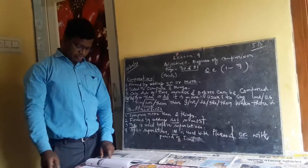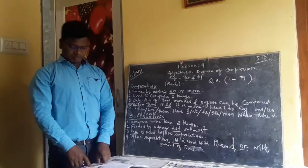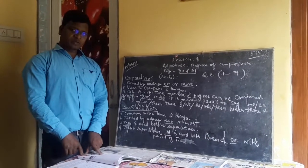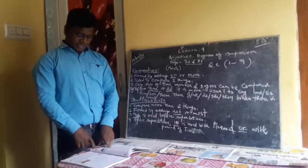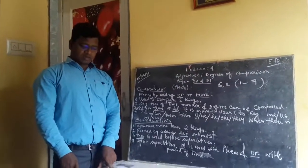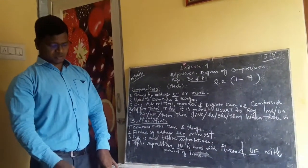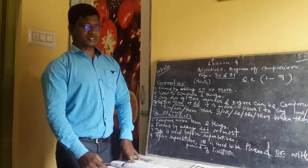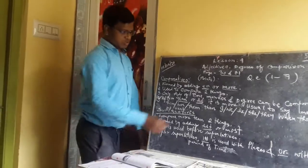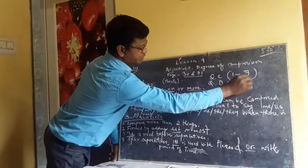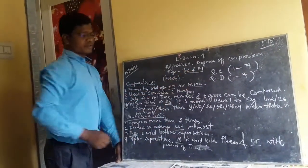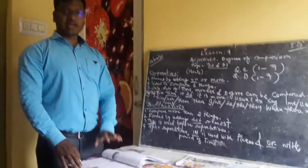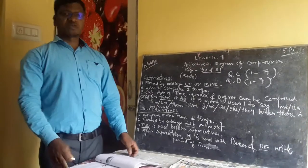Let us move on to question number D: rewrite these sentences correctly. For example: 'Messy is famouser than Tenured Card' — here 'famouser' is wrong. In the comparative degree, we say 'more famous', so the correct sentence is 'Messy is more famous than Tenured Card.' Number 2: 'This ocean is the most deepest' — here we don't write 'most deepest'; instead we write 'This ocean is the deepest.' Do question number D also, from 1 to 7, on page 30 and 31. Please write both exercises in your copy. Hope I have made all these points very clear for you. If you have any doubts, please feel free to ask me questions. Thank you so much.